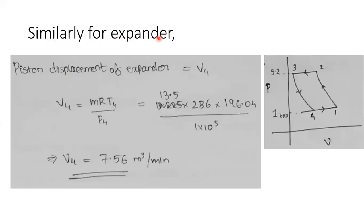Similarly, the piston displacement of the expander is V4 — the maximum volume swept by the expander piston during process 3→4. Using V4 = mRT4/P4 and substituting all values, V4 = 7.56 m³/min.